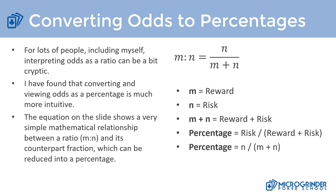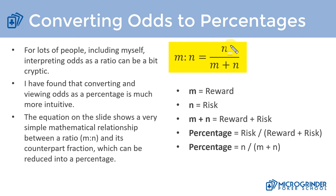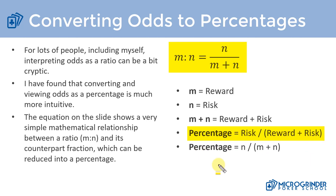The conversion is very simple. There's a straightforward mathematical relationship between a ratio and a fraction, and we can turn a fraction into a percentage. Given m to n, the percentage equals n divided by the sum of m plus n, where m is our reward and n is our risk. So our percentage is: risk divided by the sum of risk plus reward.